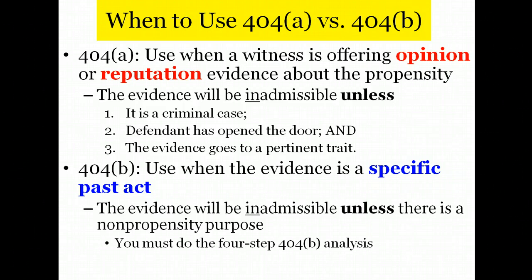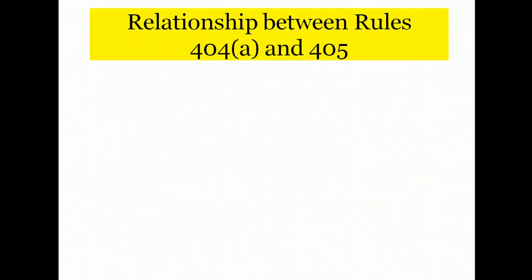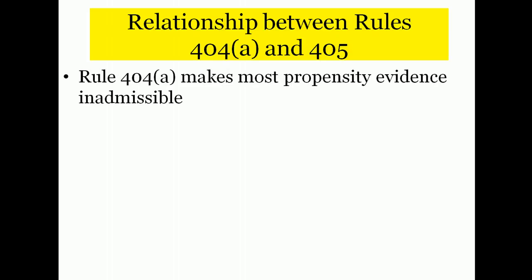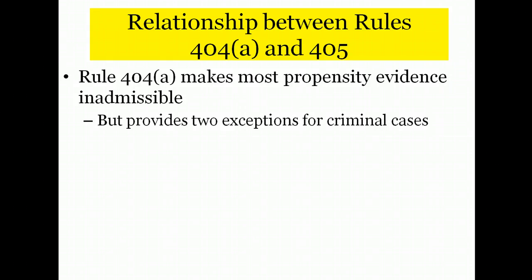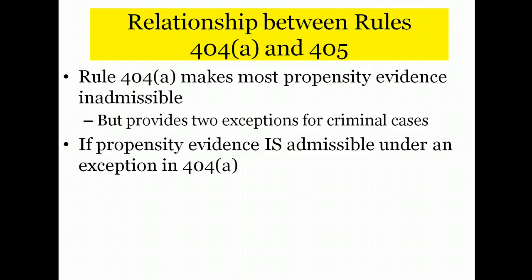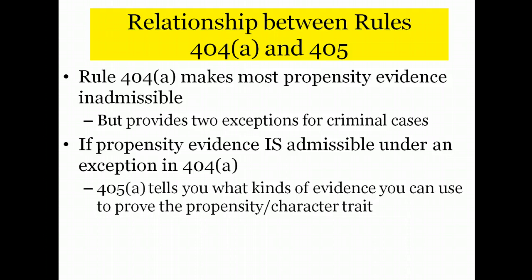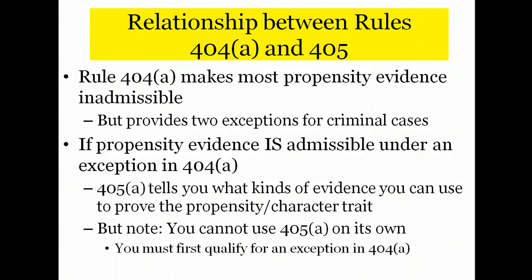There's a four-step analysis that we will discuss in much more detail in class. Finally, a note about Rule 405a. Rule 405a works in tandem with Rule 404a. Rule 404a makes most propensity evidence inadmissible, but there are two exceptions for criminal cases. When one of those exceptions applies so that propensity evidence is admissible, you go to Rule 405a, which tells you what kinds of evidence you can use to prove the propensity or the character trait. Remember, you cannot use 405a on its own — you must first qualify the evidence under an exception in 404a, and only at that point does 405a come into play.